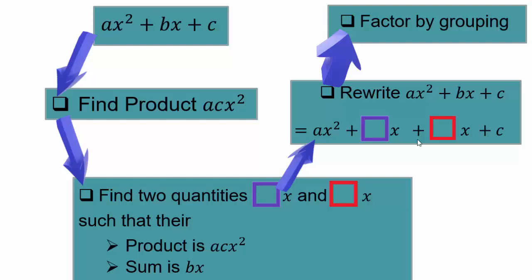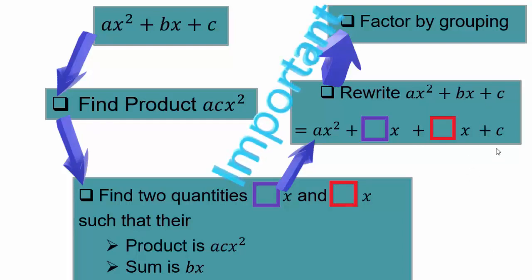Once you have factored by grouping and found your factors, it's important that you multiply the two factors together and check that you got the right answer: ax squared plus bx plus c.